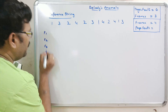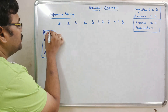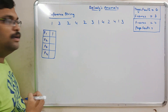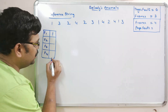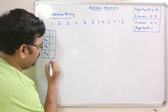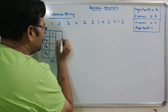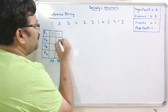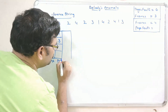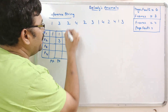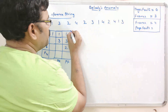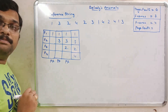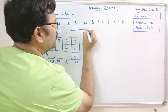Page 1 occupies frame 1 — it's a page fault because page 1 is not in main memory. The second reference is page 3, which is also not available — another page fault. Third, page 2 is not available — another page fault. Fourth, page 4 is not available, so it is placed in the fourth frame — again a page fault. Now all four frames are filled.